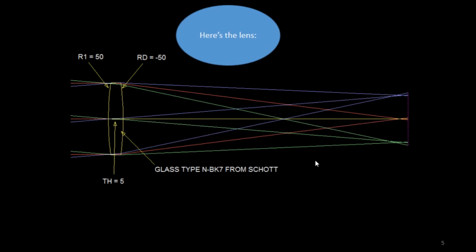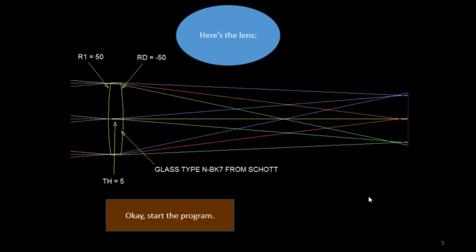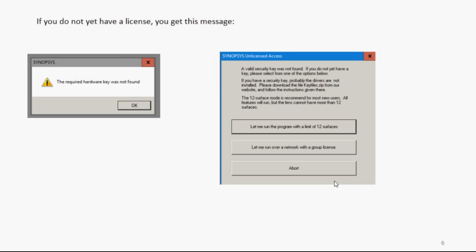Here's the lens, first of all. We're going to have a radius of 50mm on both sides, thickness of 5, and a glass type from the Schott catalog. Start the program. Double click on the icon. If you don't have a license, you get a message that the hardware key was not found. So you want to select, let me run the program with a limit of 12 surfaces.